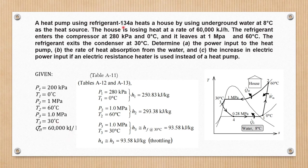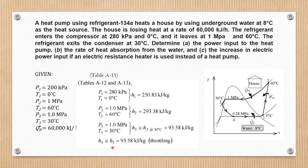Going back to the problem, refrigerant 134A is mentioned, so we're going to use property tables A11 to A13. From table A12, we interpolate to get enthalpy h1 equal to 250.83 kilojoules per kilogram. Enthalpy h2 is equal to 293.38 kilojoules per kilogram, found in table A13. Enthalpy h3 is approximately equal to the saturated liquid at 30 degrees Celsius, which is 93.58 kilojoules per kilogram. Specific enthalpy h4 is approximately equal to h3, also 93.58 kilojoules per kilogram.